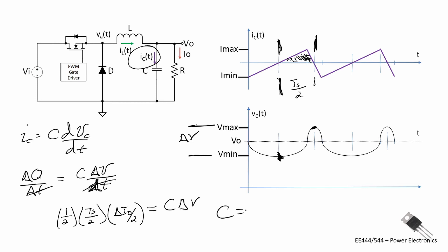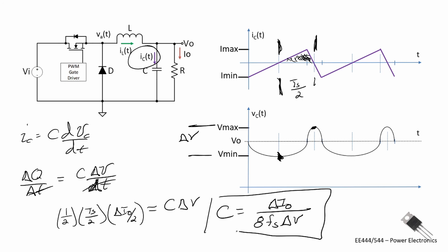The capacitor equation is C = ΔI_O / (8 × f_s × ΔV). So if we know the ripple current through the inductor and have a specification for the ripple voltage ΔV across the capacitor, and we know the switching frequency f_s, we can size the capacitor accordingly. This equation relates the ripple voltage across the capacitor — which is ultimately across the load — to the ripple current and switching frequency.